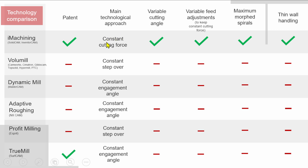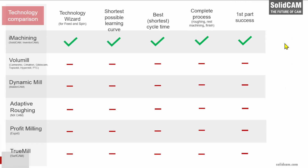We guarantee constant cutting force on the tool and constant spindle power. This enables us to change the cutting angle and feed at every point of the toolpath, always ensuring constant cutting force on the tool — if the cutting angle increases, we reduce the feed and vice versa. We have maximum morph spiral, the most efficient type of toolpath, and excellent thin wall handling. We are the only technology that has a technology wizard — because iMachining guarantees constant cutting force on the tool.